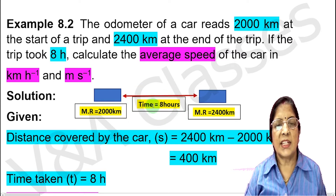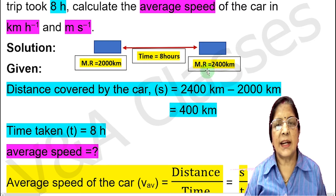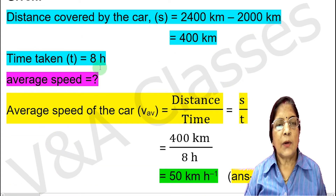Let's start with the given values. We have two odometer readings: the starting reading is 2,000 km and the last reading is 2,400 km. We subtract the starting reading from the last reading, so the distance covered by the car equals 2,400 km minus 2,000 km, which equals 400 km. Time taken, t, equals 8 hours.